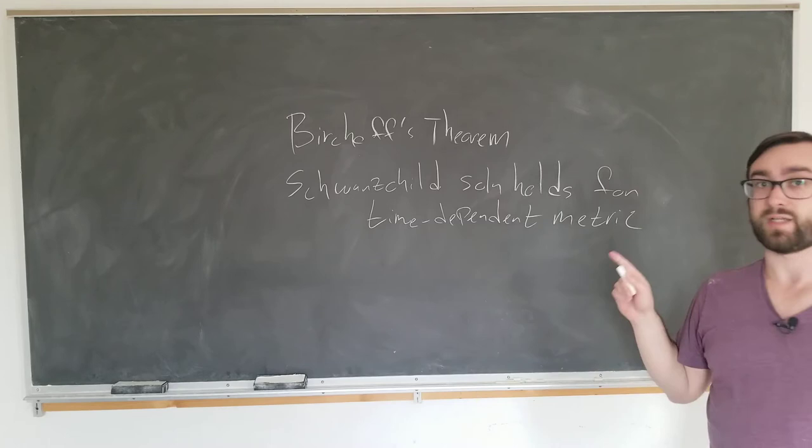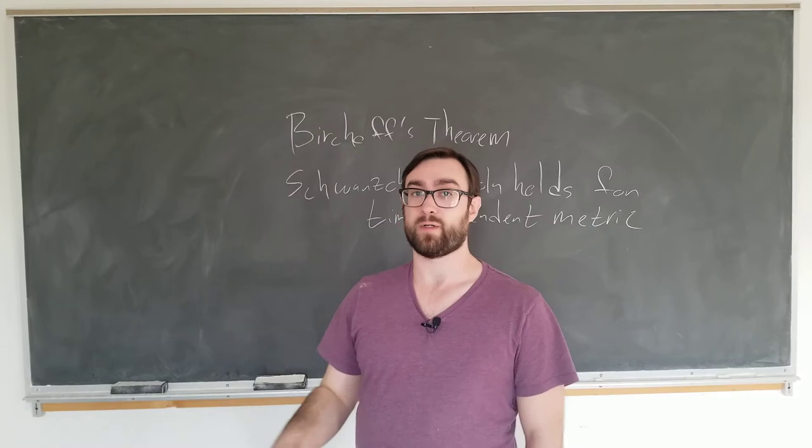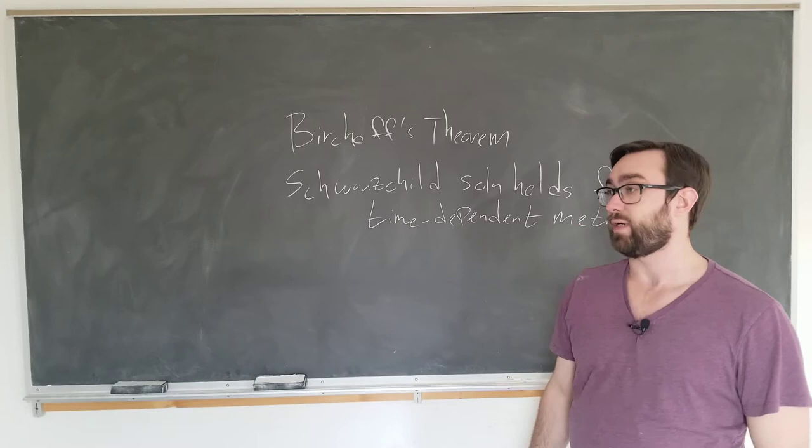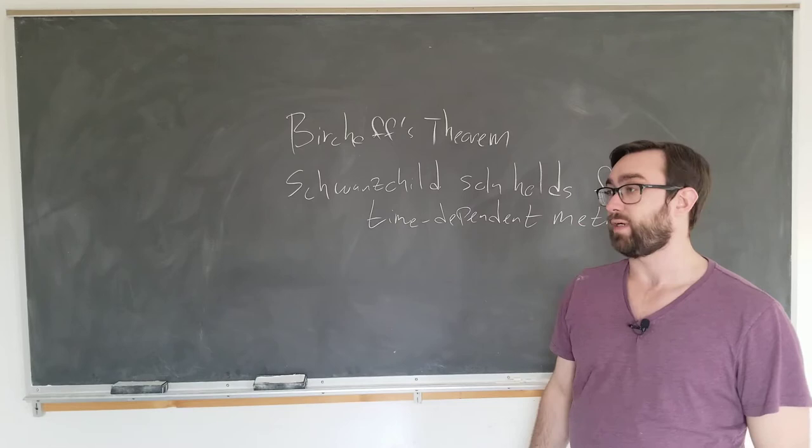This is a nice theorem because it allows us to say something about a far wider class of metrics than the Schwarzschild metric originally covers, by using the same metric with the two functions depending on time. Let's go ahead and write down the metric that I'm referring to.